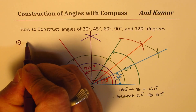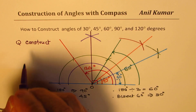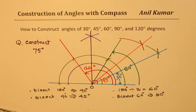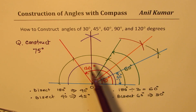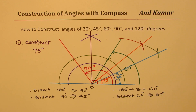Here's a question for you: construct 75 degrees. Since 45 plus 30 equals 75, you make 30 and 45 and combine them to get the 75 degree angle. In this video we learned how to bisect an angle and construct different angles by combining bisecting steps. Subscribe, like, and share — thanks for watching!